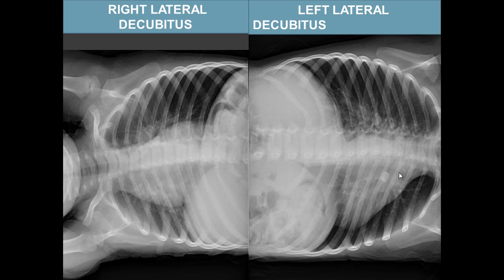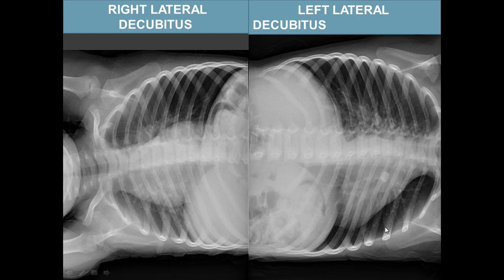In children, expiratory views are not feasible because children are non-cooperative. Instead, perform a lateral decubitus view. If the foreign body is on the left, place the patient in left lateral decubitus: on the normal side air escapes normally, but on the abnormal side air is trapped due to a ball-valve phenomenon — air enters but cannot exit.